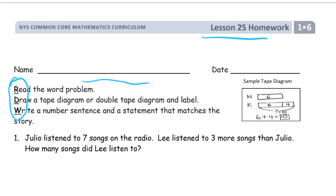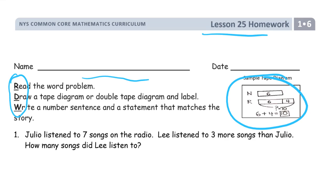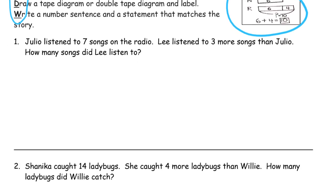Read, draw, write. That's R-D-W. Read the word problem first — you might be surprised how often that one gets skipped. Draw a tape diagram or a double tape diagram and label it; this is an example of a double tape diagram that is labeled. And write a number sentence and a statement that matches the story. If you're not sure how to do that, I'm going to give you plenty of examples here.